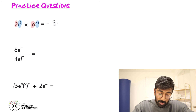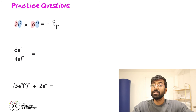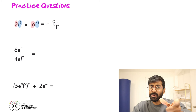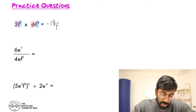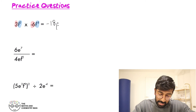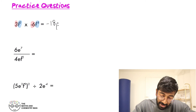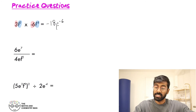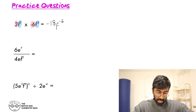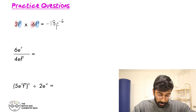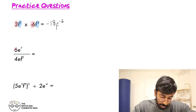Remember, when we're multiplying, we add our powers: 2 plus minus 8 — so that's F to the power of minus 6.